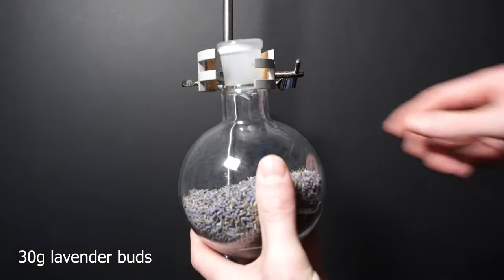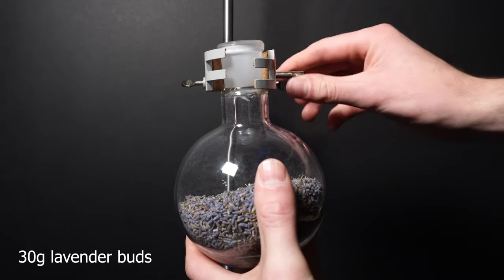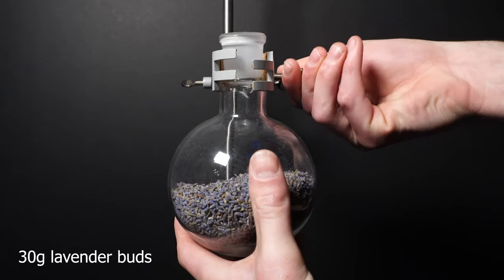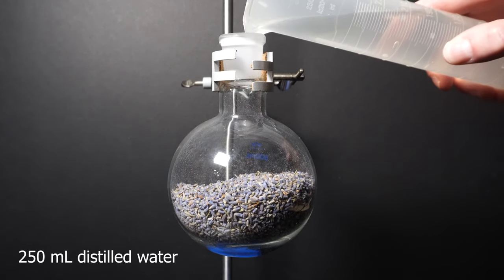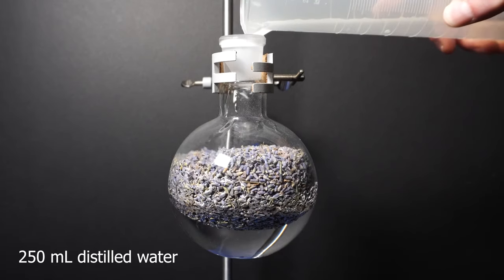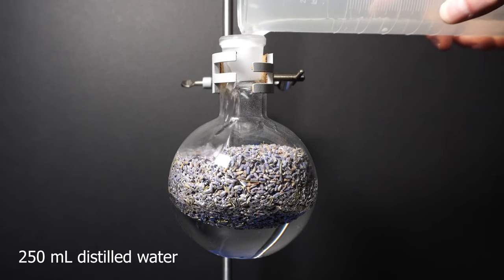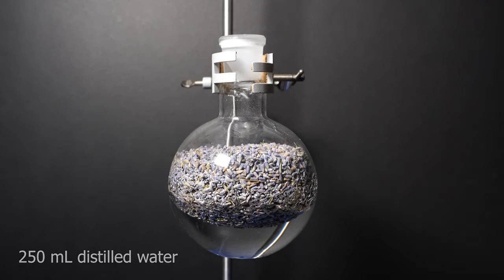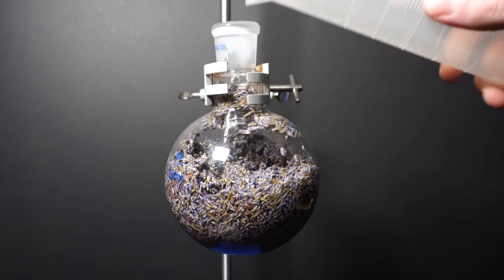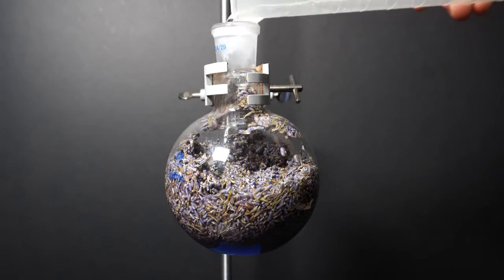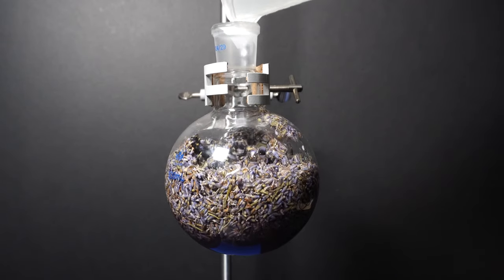We start by adding 30 grams of lavender buds in a round bottom flask. Ideally fresh lavender is used however my lavender has been dry and this causes my yield to be pretty poor. I then add 250 milliliters of water followed by stirring and letting the lavender soak up some of the water. Once most of the water was soaked up I add an additional 50 milliliters of water.